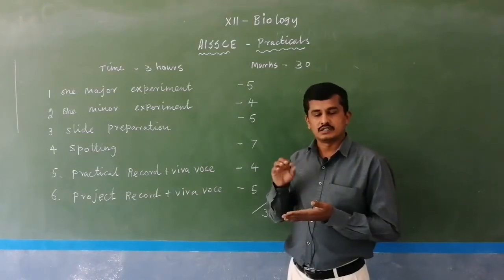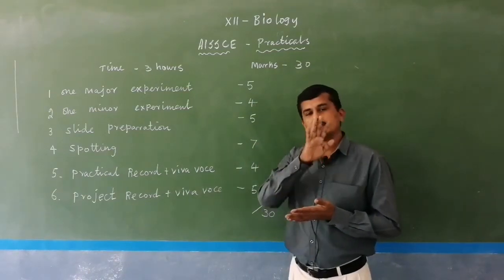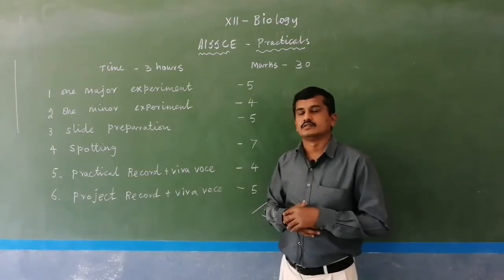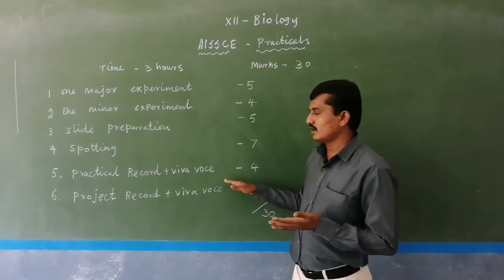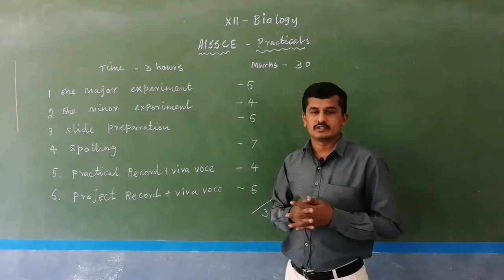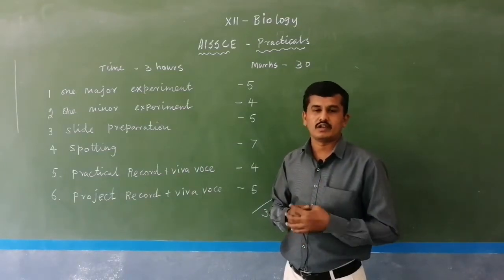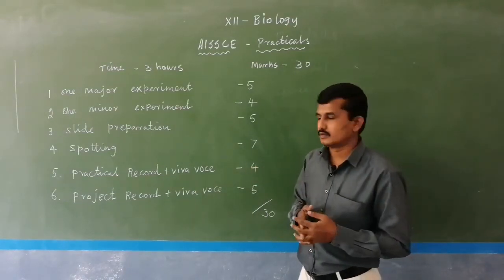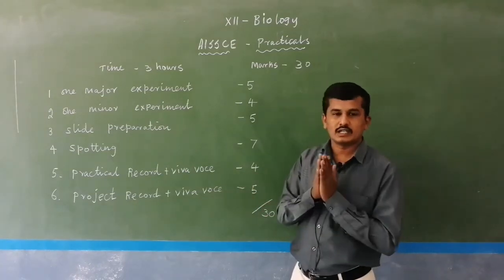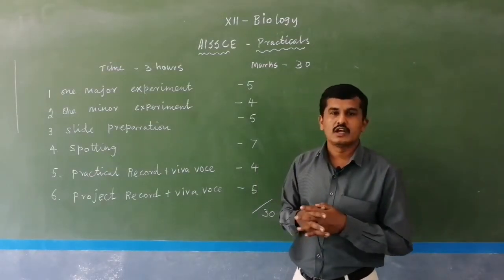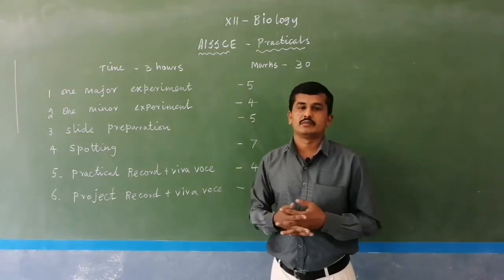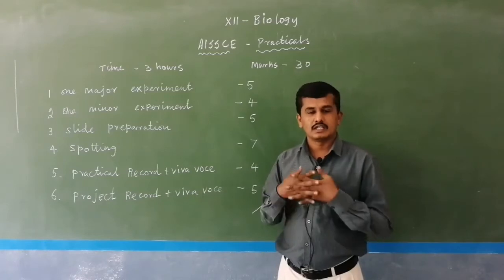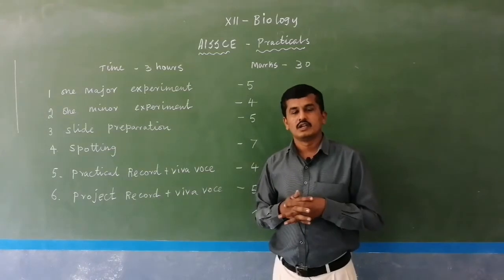The project work: you form or do an investigatory project, and after finishing your project, get it corrected by the internal examiner or your biology teacher. Afterwards, you spiral-bind the project notebook. At examination time, you submit your record notebook and project work. The external examiner asks viva questions from the record and the project — about merits and demerits of your project, how drawings were done, and procedures for the project work.